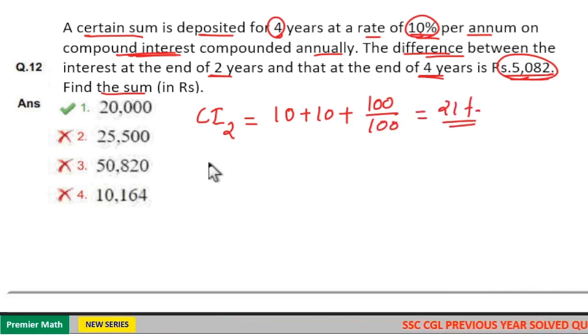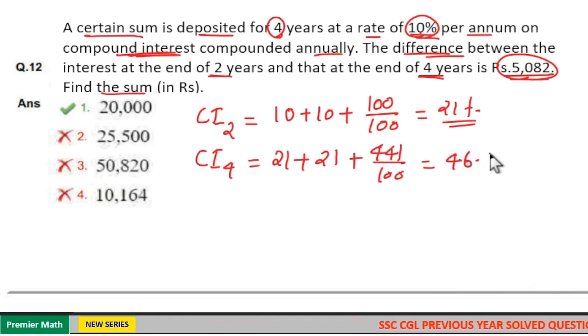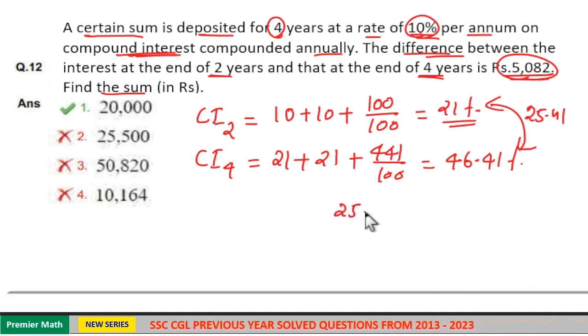So compound interest for 4 year will be, consider for 1 year it is 21, again next to 1 year it is 21. So 21 plus 21 plus 21 into 21 is 441 divided by 100, which is equal to 46.41%. Now the difference here is equal to 25.41%. Now this 25.41% is the 2 year interest difference.